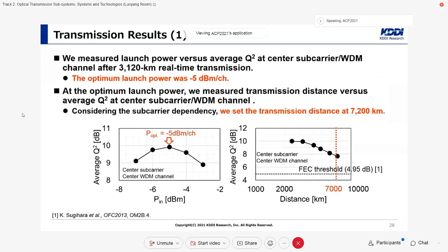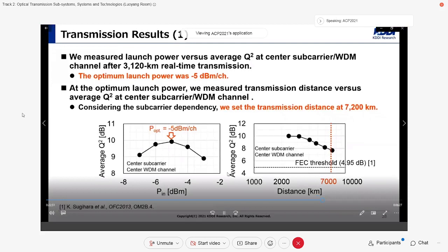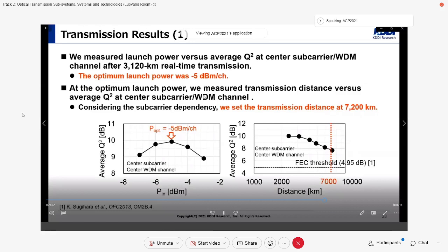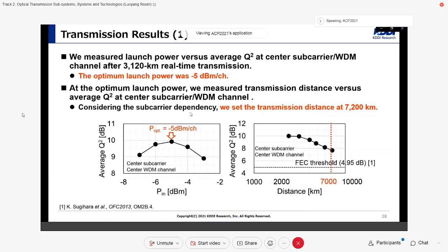First, to determine launch power, we measured launch power versus average Q-factor at center sub-carrier and WDM channel after 3000 km real-time transmission. The optimum launch power was minus 5 dBm per channel. At the optimum launch power, we measured transmission distance versus average Q-factor at center sub-carrier and center WDM channel. Considering the sub-carrier dependency, we set the transmission distance at 7200 km, assuming an FEC threshold of 4.95 dB.